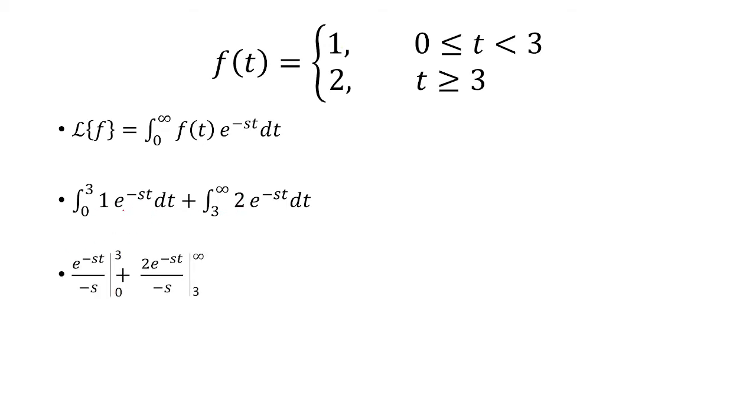From there, we find the antiderivative. e to negative st is just e to negative st over negative s. The antiderivative of 2e to negative st is the same thing, except we're just going to multiply by 2.